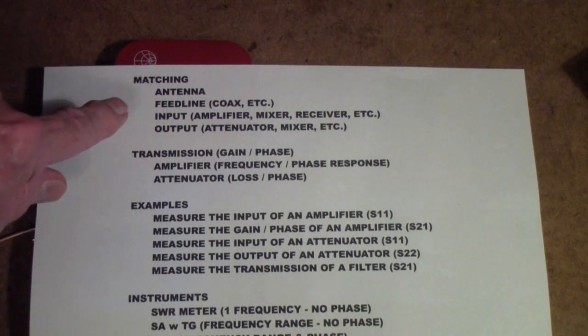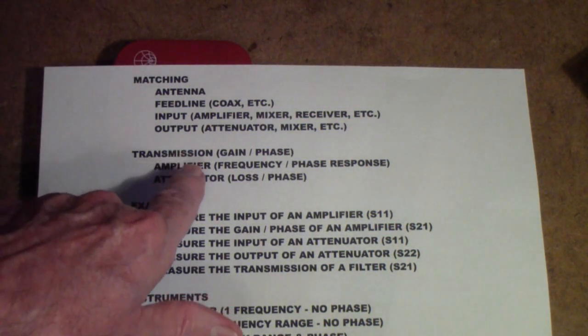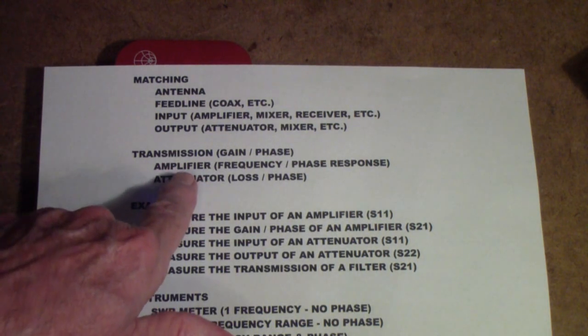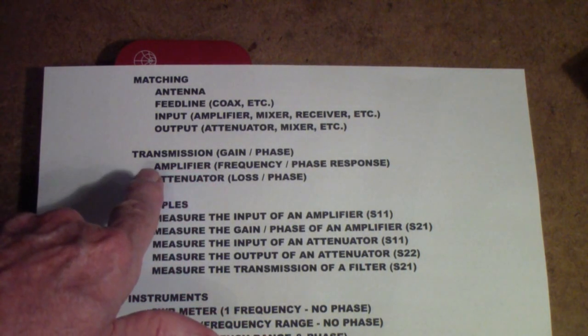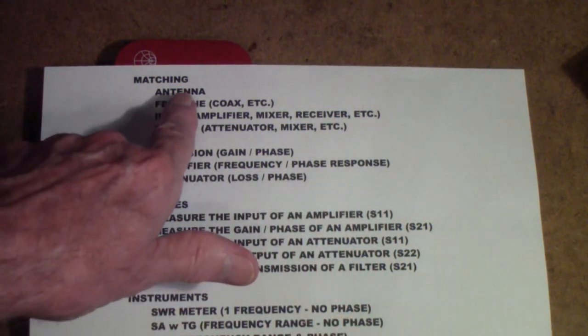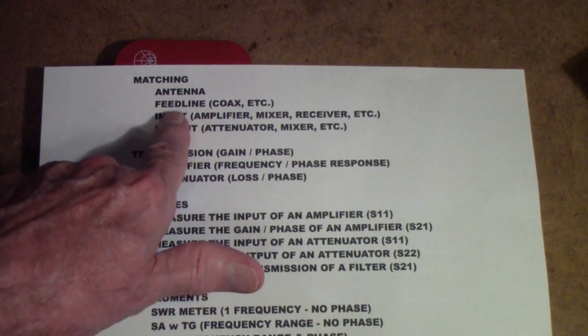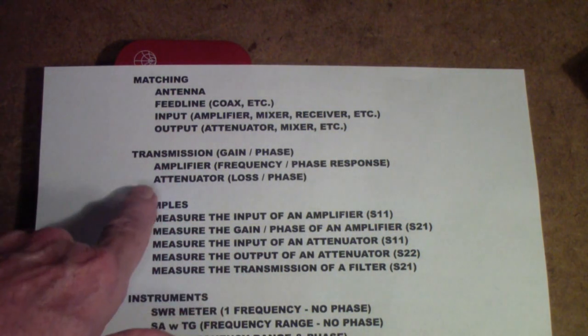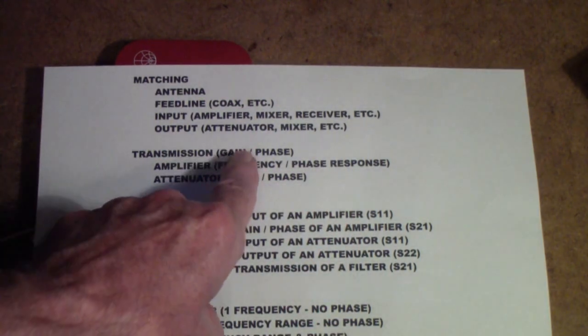We'll talk more about that, but matching, you're generally only interested in one device. You're trying to figure out what do I have to do to match this device to something else. Transmission, once again you're only talking about one device, but in this case you're talking about measuring something going all the way through the device. So you're not just interested in a single point like the antenna or a feed line.